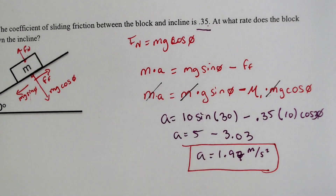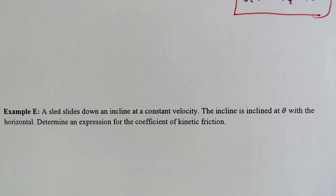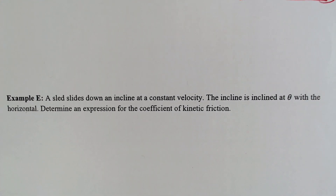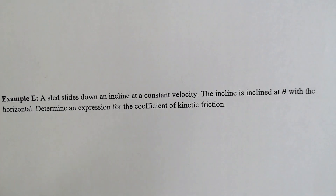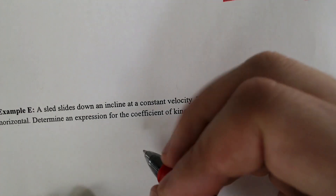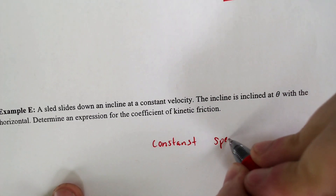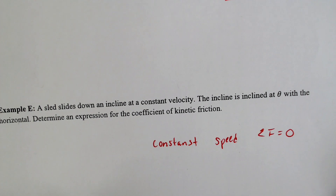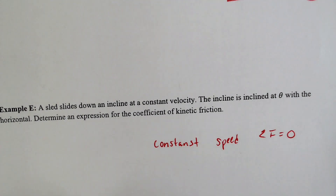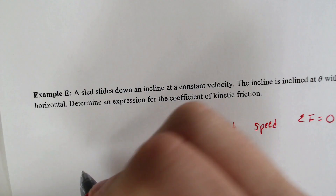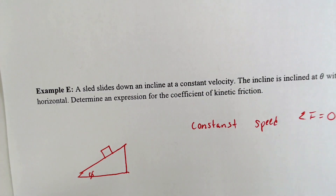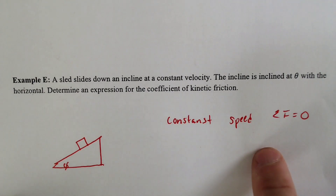That's this example. Now we've got another one just for practice. A sled is sliding down an incline at a constant velocity — how unique. The incline is at angle theta with the horizontal. Determine an expression for the coefficient of kinetic friction. We don't know the angle and we don't know the mass, but we do know it has a constant speed and we want the coefficient of kinetic friction.